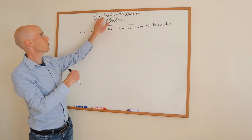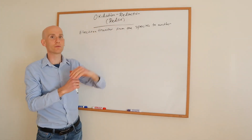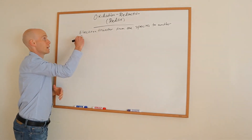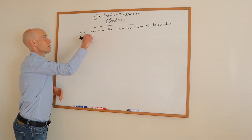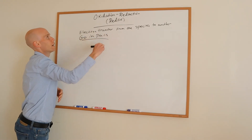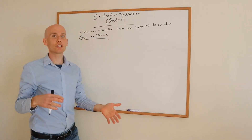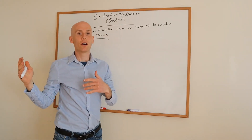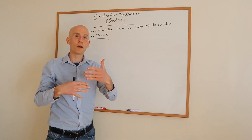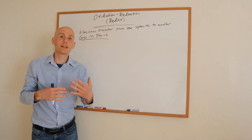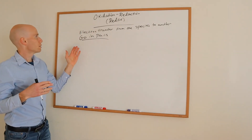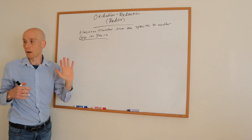Oxidation and reduction — these things must go in pairs. They always go in pairs. You cannot have oxidation without a reduction. So you always have two reactions going in tandem, simultaneously. These go in pairs.